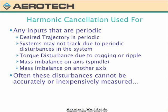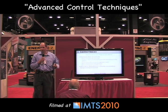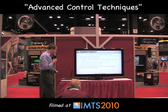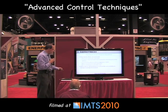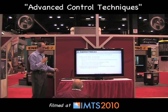Harmonic cancellation can be used any time you have a desired trajectory which is periodic or some disturbance which is periodic in the system. A common one would be cogging or ripple torque in a motor, or if you have some mass imbalance on a spindle. Whenever you have a spindle you inevitably have some imbalance you cannot remove, which will look like a sinusoidal disturbance. Often these disturbances are not easily or cheaply measured, so you need some other technique for handling them.